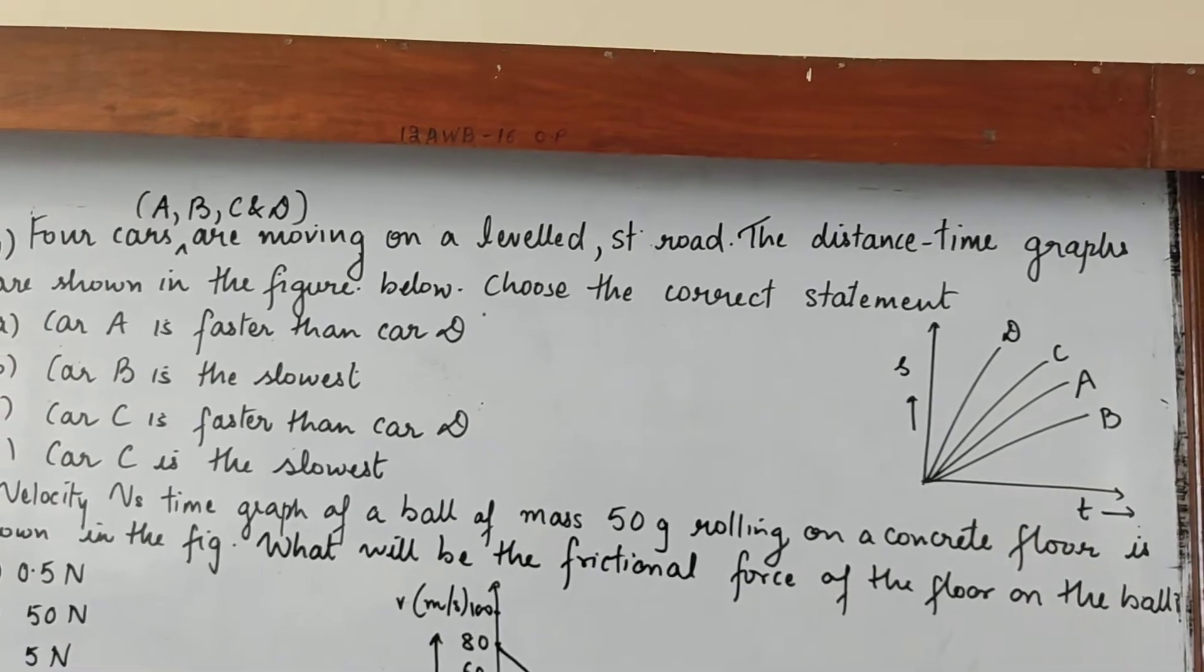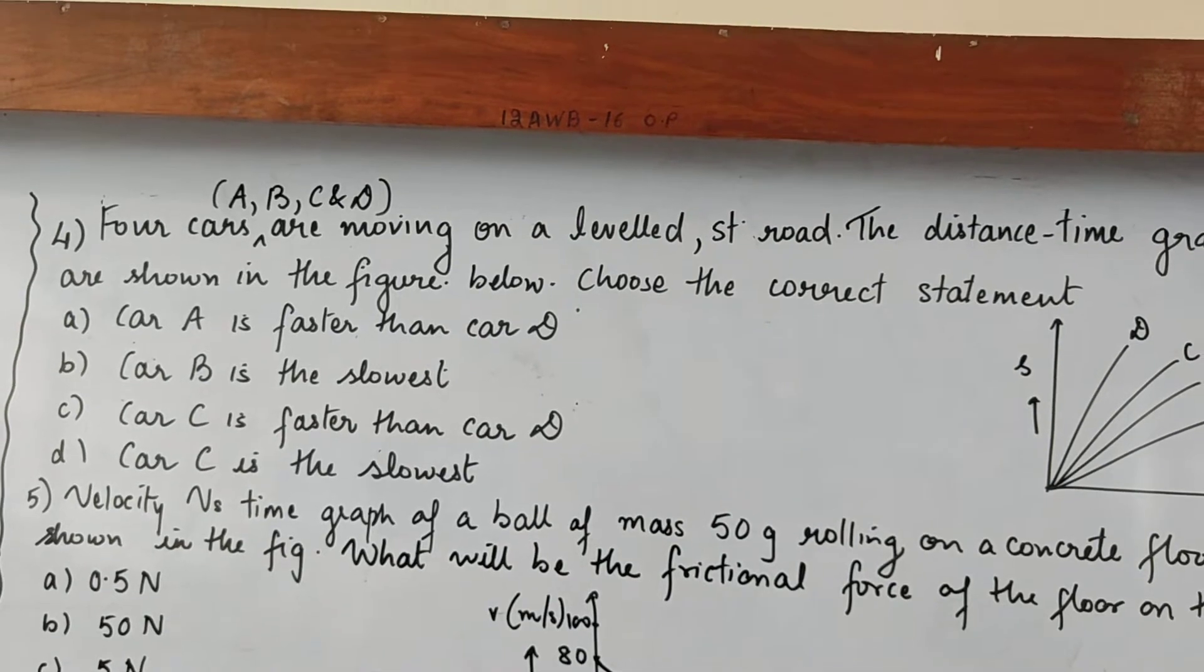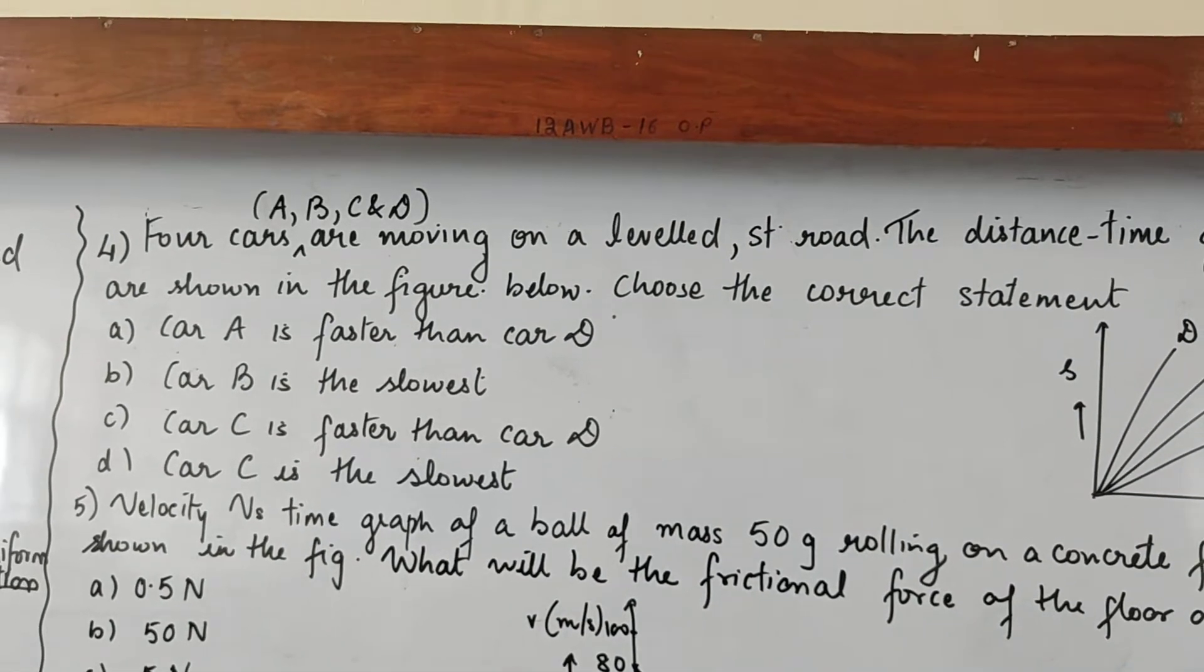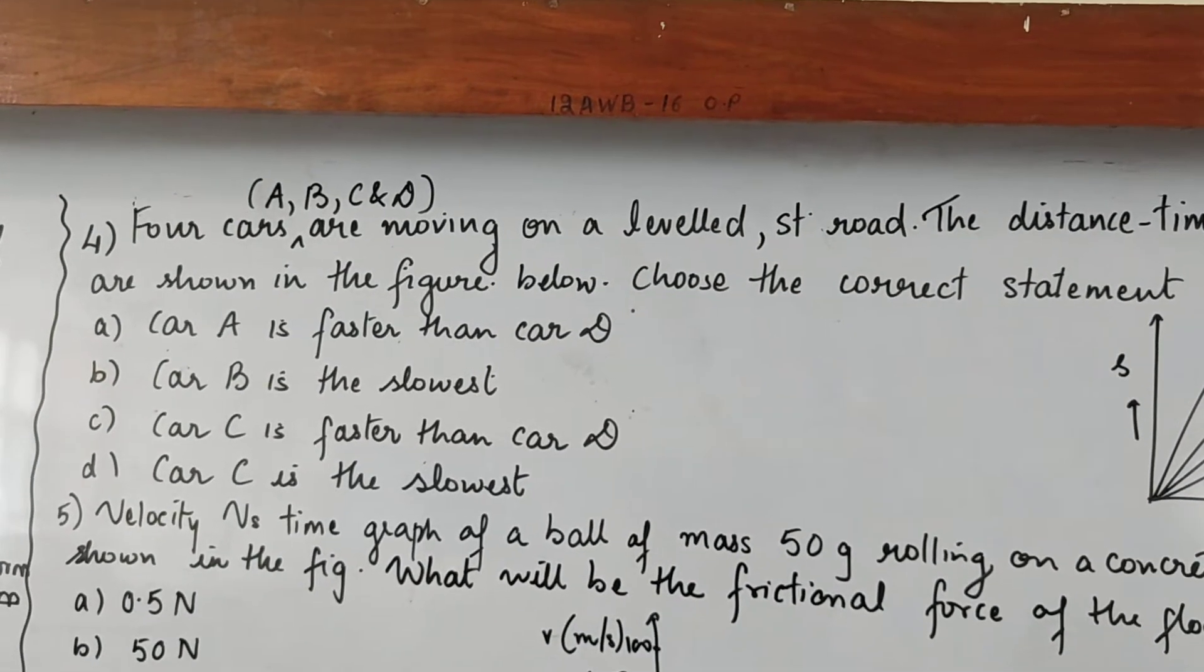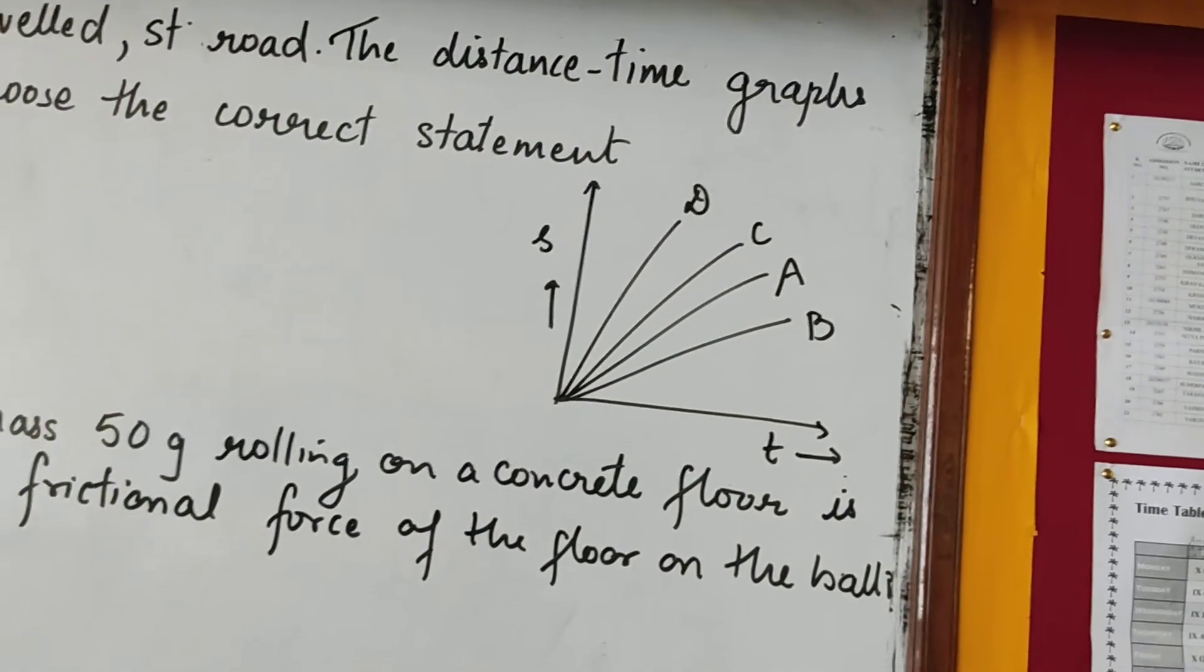You have to choose a correct statement. Car A is faster than car D, car B is the slowest, car C is faster than car D, car C is the slowest. Now, if you look at the graph, first of all, it is ST graph, okay? ST graph for four different cars A, B, C and D.